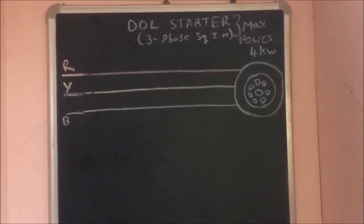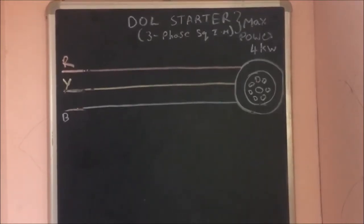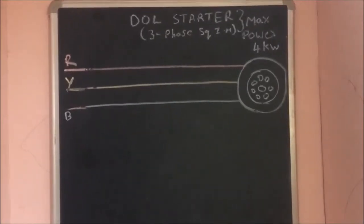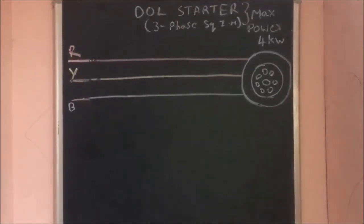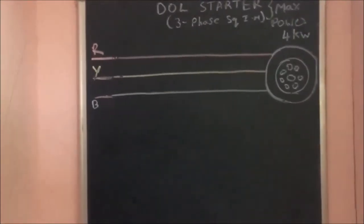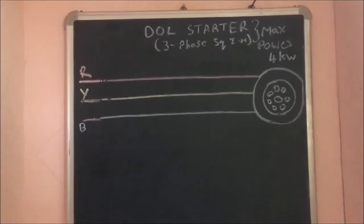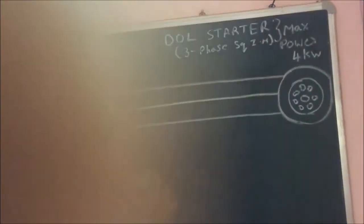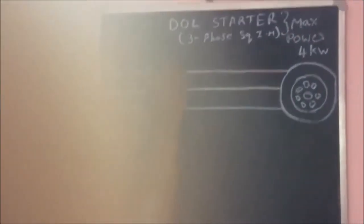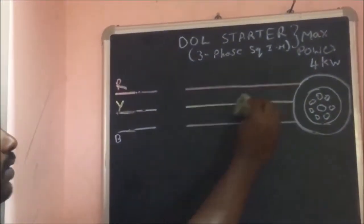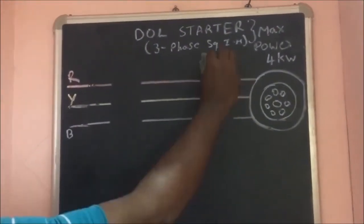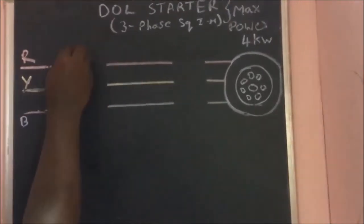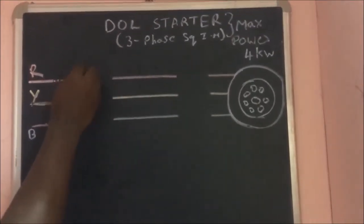From an exam point of view, for starters, 50% of the marks are for the diagram only. If you know the diagram, the remaining parts become easy. Take a paper and first try to draw the direct online diagram. First, draw three horizontal lines and at the end make two circles as the symbol of a squirrel cage induction motor.